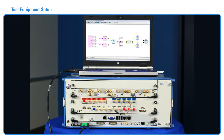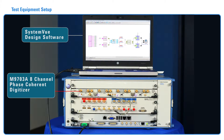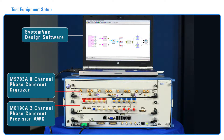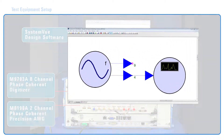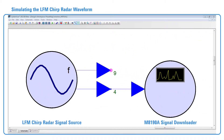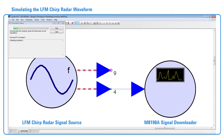The test setup consists of SystemVue design software installed on a laptop which is connected to the AXIe hardware. An M9703A Digitizer will be used to digitize and process the signals using the custom FPGA algorithms programmed with SystemVue. An M8190A Two-Channel Precision Arbitrary Waveform Generator, or AWG, will be used to generate the LFM Chirped Radar stimulus using SystemVue. Starting the simulation downloads the signal to the M8190A AWG.